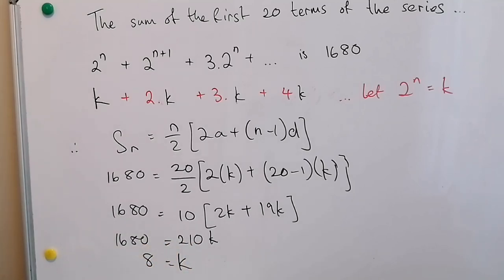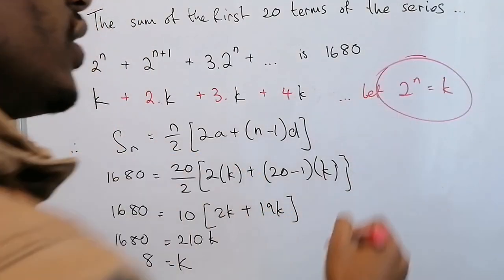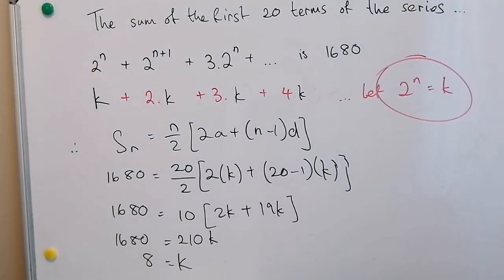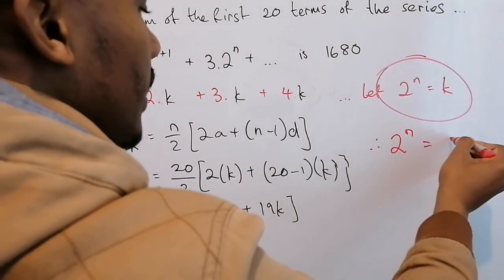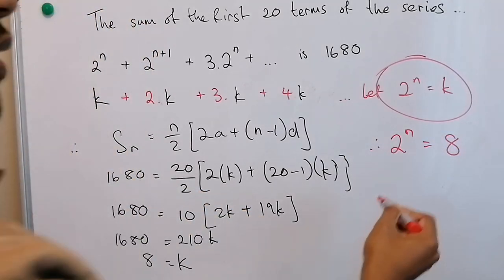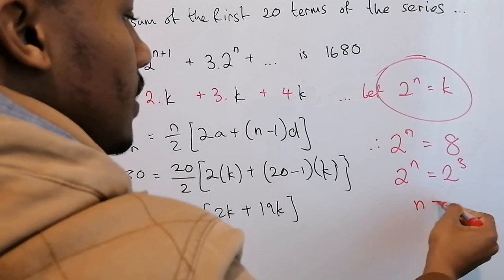So let's keep in mind that we are trying to solve n not k. However, we started out by saying that 2 to the power of n is equal to k. And here we worked out that k is equal to 8. So that must mean that 2 to the power of n is equal to 8, which means n is equal to 3.